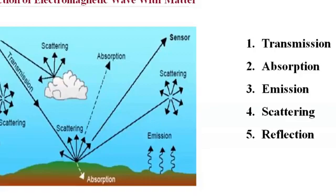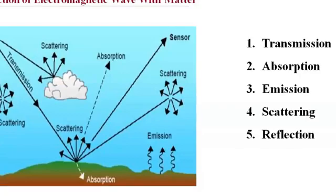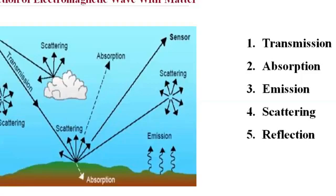The second mode is absorption. When rays interact with matter, some of the energy can be absorbed by the matter or surface. This absorbed energy is ultimately used in heating the matter.